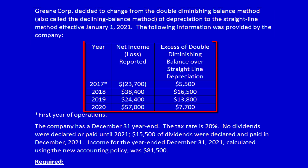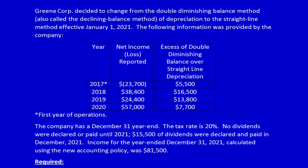We have the year, their net income or loss reported in that year, and also the excess of the double diminishing balance method over the straight line method. The question did not give us the amount actually charged on the income statement using the double diminishing balance. Instead, they said: if we had used straight line instead of double diminishing, this is the difference, because double diminishing balance has higher depreciation expense in the first half of the life of the asset. It's an excess of double diminishing balance over the straight line.